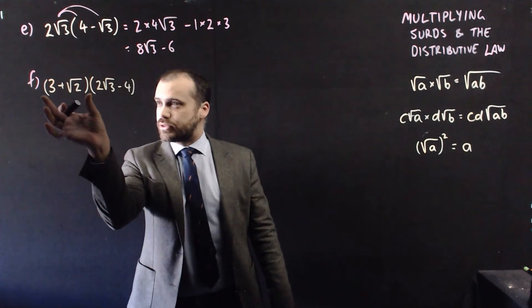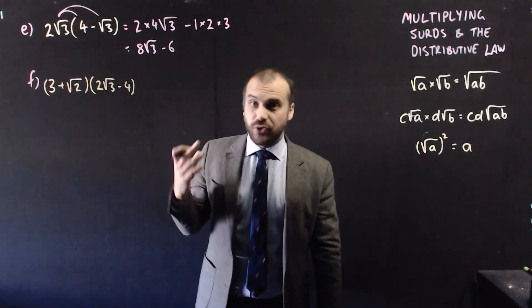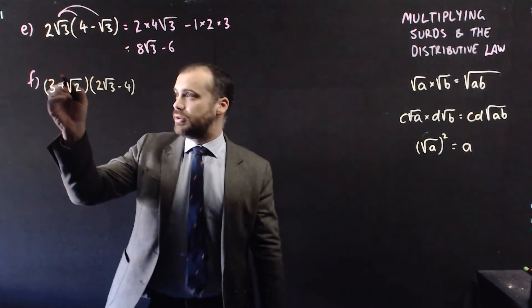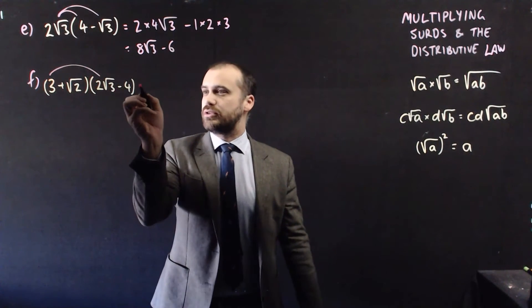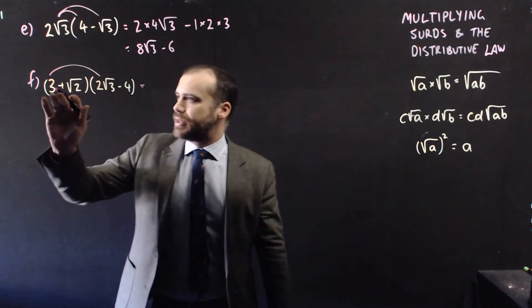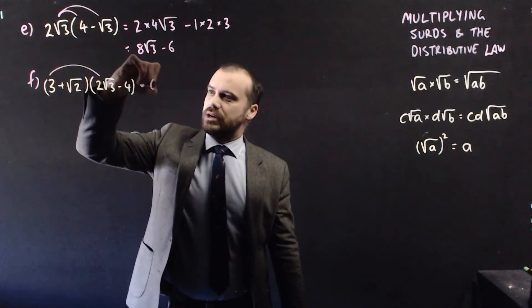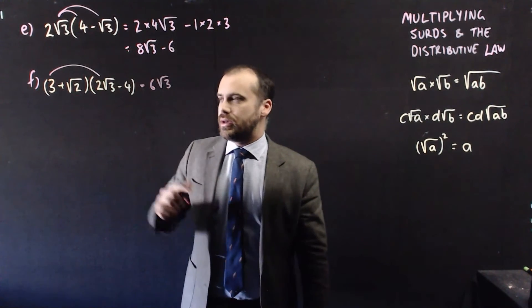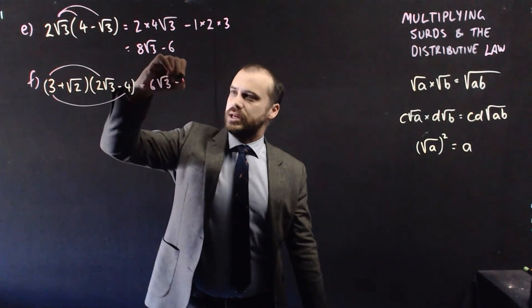So a set of double brackets here. 3 plus root 2 times 2 root 3 minus 4. FOIL method here. First, so 3 times 2 root 3. Now we can speed up the process here. You don't have to show absolutely everything. 3 times 2 root 3. That's 3 times 2, which is 6. 6 root 3 is our answer there. Outer, 3 times negative 4 is negative 12.